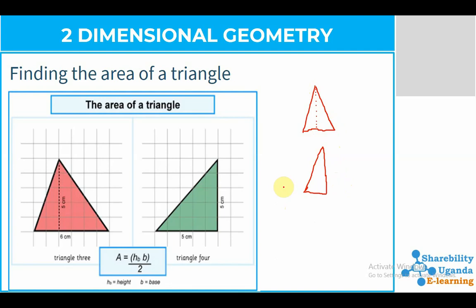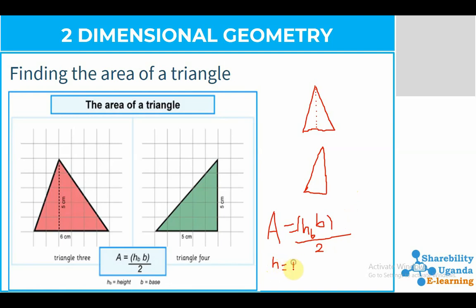Now here we use a formula for finding the area of these triangles. Our formula is: Area is equal to h times b, divided by two. In this formula, h is the height of the triangle.